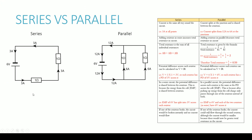In a series circuit, if one resistor were to break, current would not be able to reach the other components, so the circuit would be broken completely. However, in a parallel circuit, even if one resistor breaks, current still has the opportunity to flow through the other branch, so the circuit would still work.